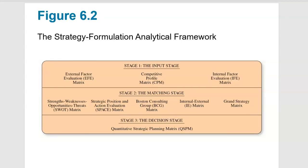Here is the strategy formulation analytical framework. There are three stages: the input stage, the matching stage, and the decision stage. The input stage is where we collect our competitor profile—what competitors are doing—along with the internal evaluation and the external evaluation discussed in previous chapters. Then we have various matrices: the SWOT analysis, SPACE, BCG, IE, and grand strategy matrix—all different tools to help select the strategy. Finally, the decision stage is where we choose strategies and plan how we're going to implement them.